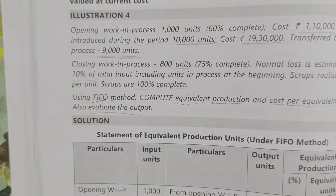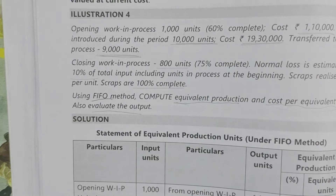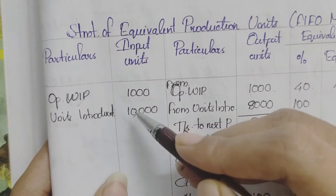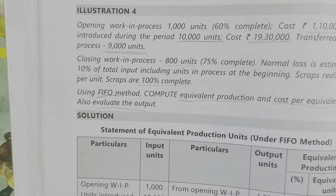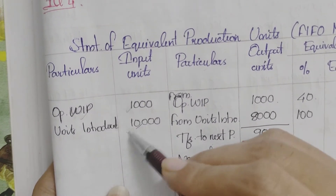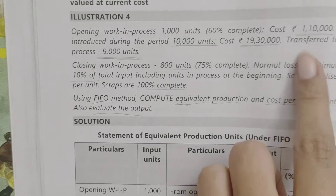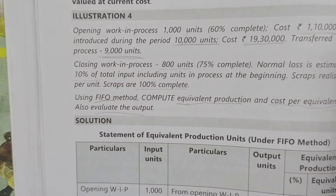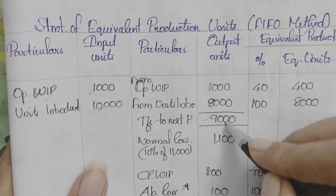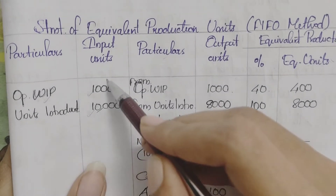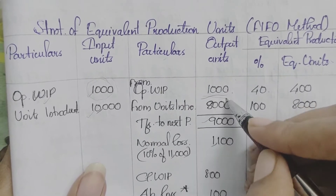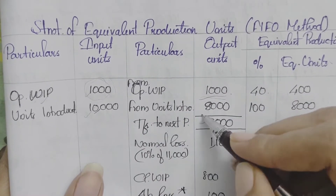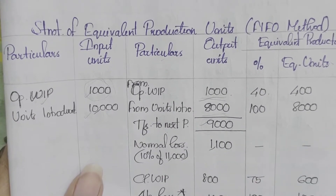Under FIFO, first we transfer the opening WIP of 1,000 units. Input units: opening WIP 1,000 units, units introduced during the period 10,000 units — total 11,000. Transfer to next process: 9,000 units. Under FIFO (First In, First Out), the opening WIP of 1,000 units is transferred first, and then the balance of 8,000 units introduced are transferred to next process.